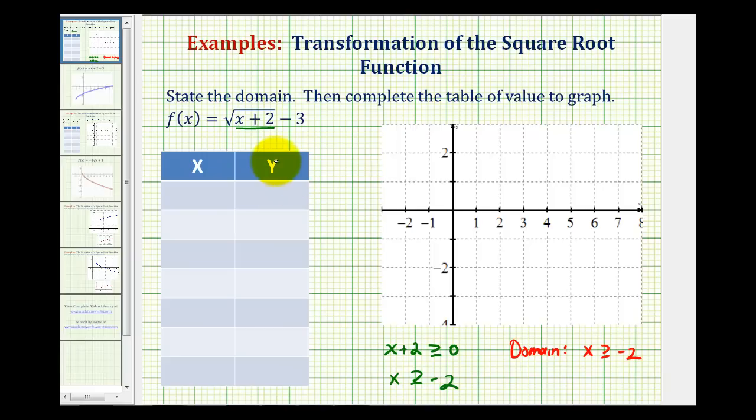Now to complete a table of values for this, we want to select values of x so that the number underneath the square root, the radicand, is a perfect square. Meaning we want the radicand to be 0, 1, 4, 9, 16 and so on, because those are all perfect squares.